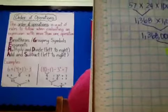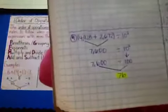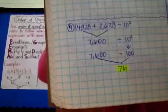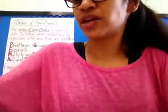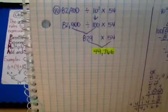Number nine — my answer for that is 76. Make sure you show your work. And the last one, number ten, is 44,766. There's my expression with the work.